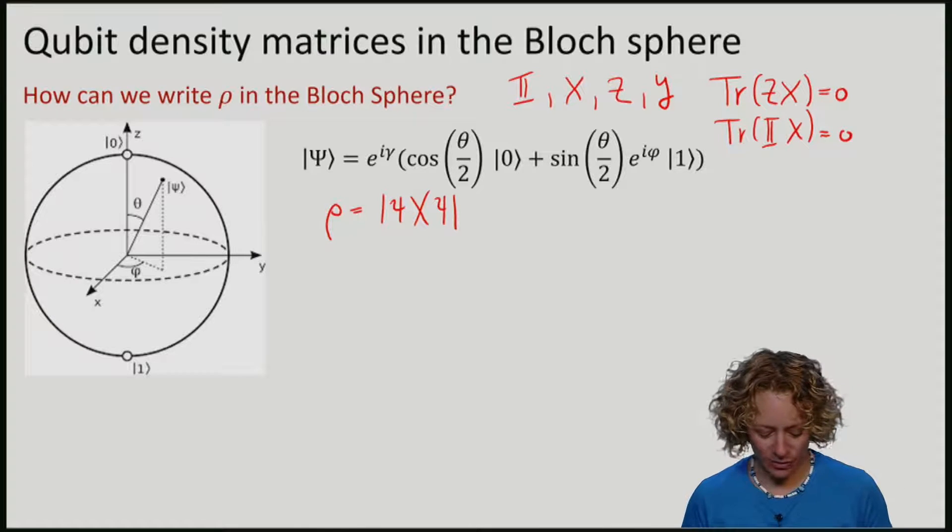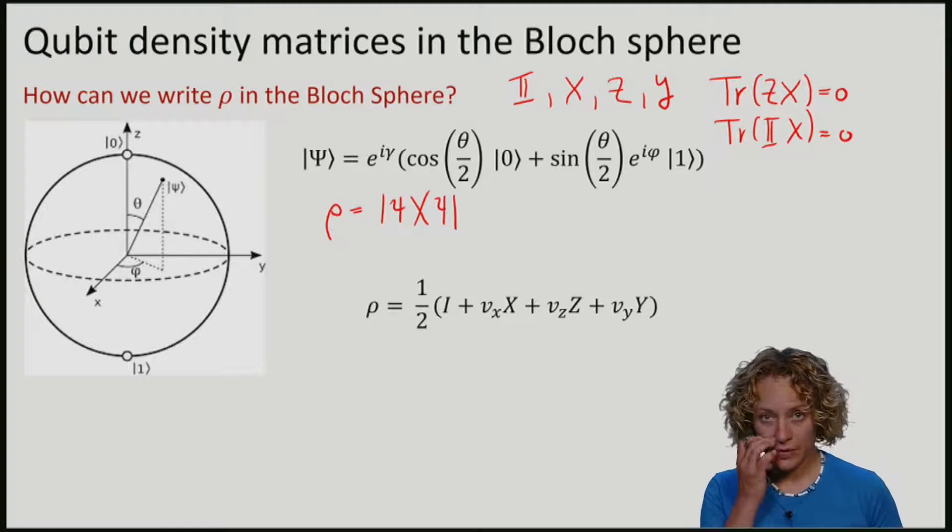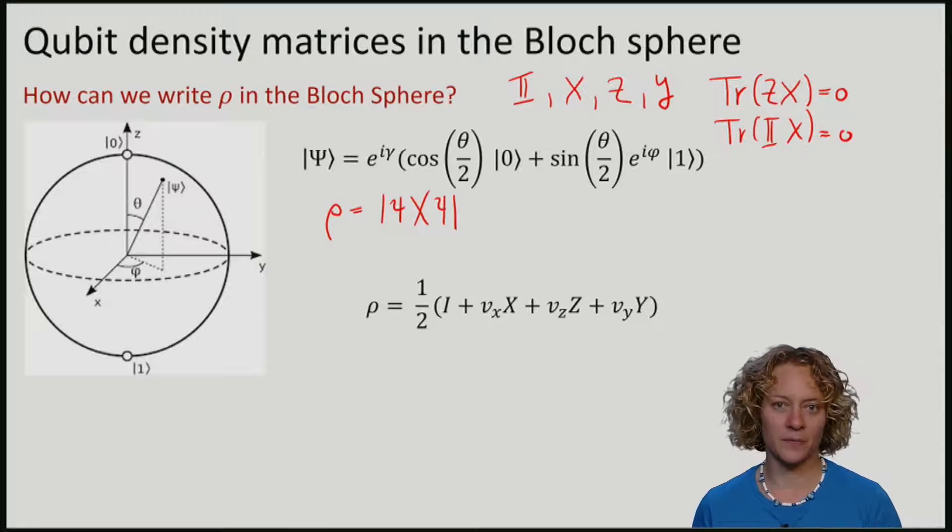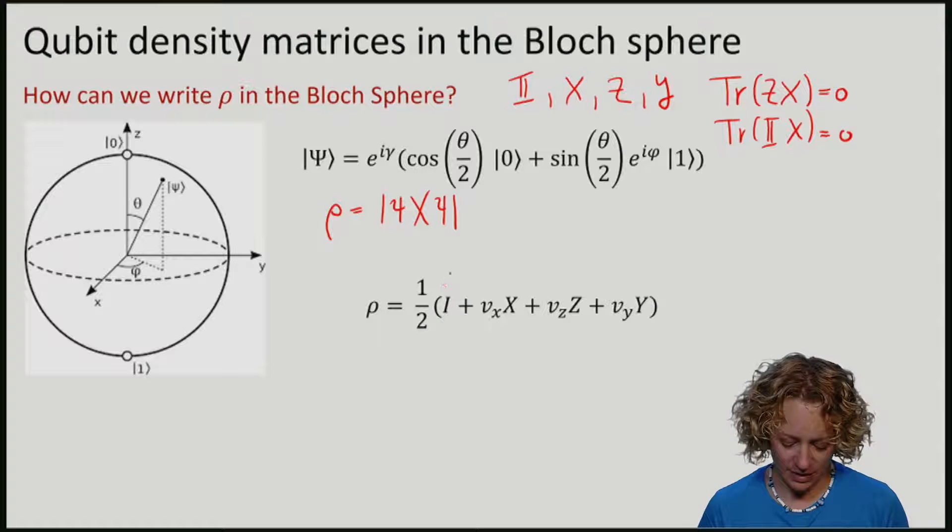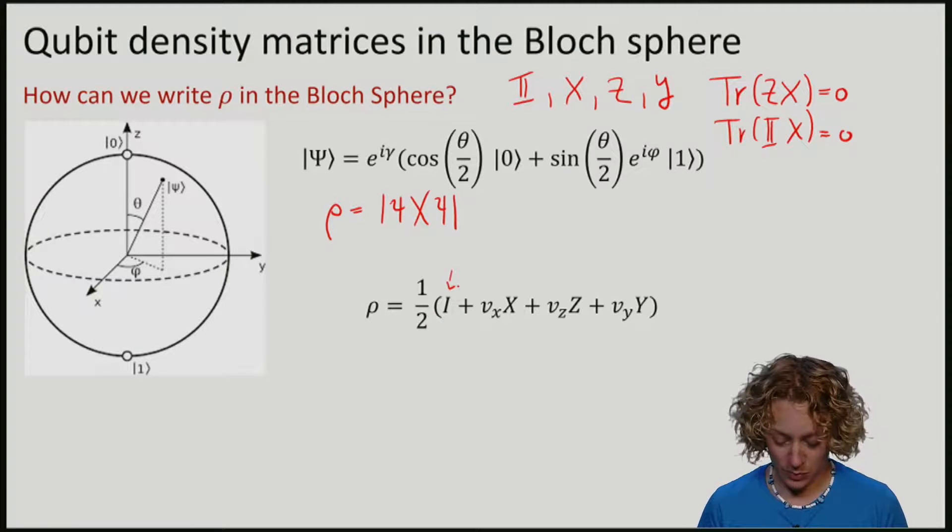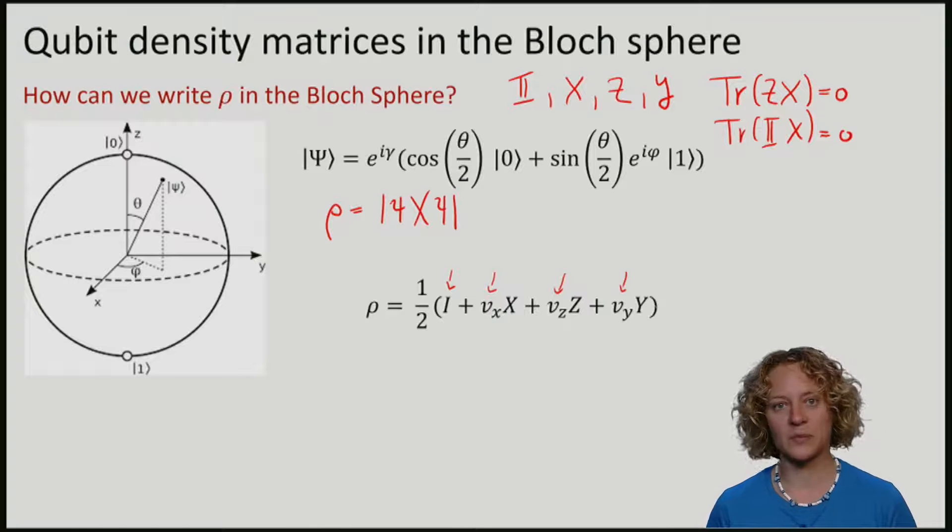All of these matrices are orthogonal, so we can express rho in the following way. Rho equals half times the identity matrix, some variable vx times X, some variable vz times Z and some variable vy times Y.